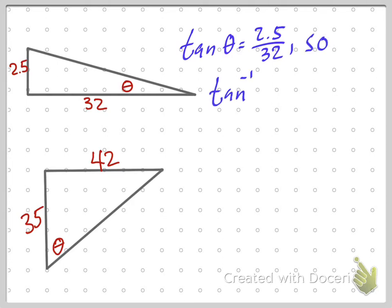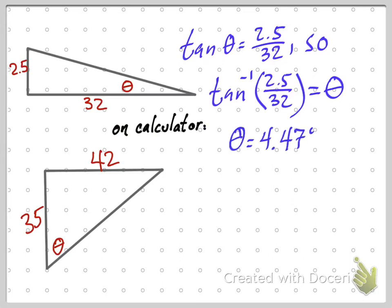That means that the inverse tangent of the same fraction, 2.5 over 32, equals theta. And on a calculator, we do that, and we get 4.47 degrees, and we're done. It's pretty quick.